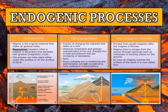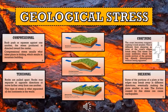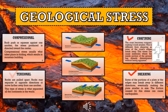Those are the different endogenic processes: magmatism, vulcanism or plutonism, and metamorphism. Geologic processes cause stress on rocks. Geological stress is the force from pulling or pushing of plates that acts on rocks, creating different behavior or characteristics. There are four types of stress that influence rock behavior: compressional, tensional, shearing, and confining stress.